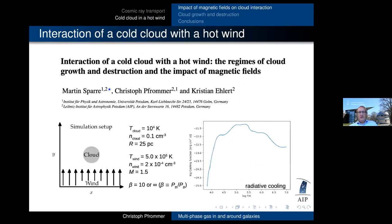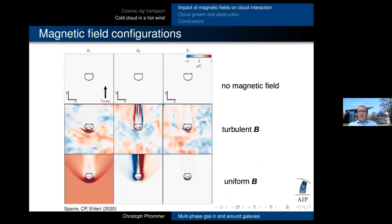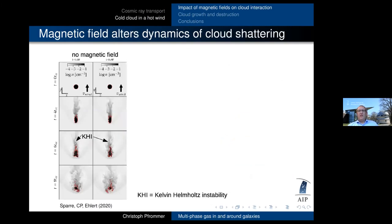On the last part of my talk. Five minutes. Perfect. In the last part of the talk, I'm going to talk about a recent paper by Martin Sparre that just got accepted. It's the interaction of a cold cloud with a hot wind. First, we look at the magnetic fields and the three models. No magnetic field, a turbulent magnetic field, a uniform field. Now, the magnetic field alters the dynamics of cloud shattering, as we show here, that's the model without a magnetic field. You can clearly see the Kelvin Helmholtz instabilities shred and shatter this cloud. And you can see that there's a turbulent wake.